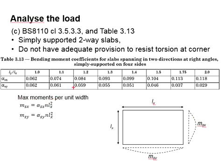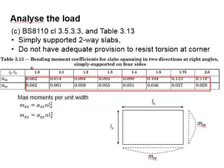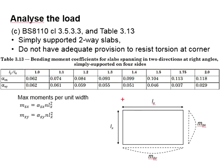The ratio ly/lx refers to the longer span of the slab divided by its shorter span. These factors are obtained based on the ly/lx ratio. If the ly/lx ratio obtained is not a round number, interpolation may be used from the two closest values.